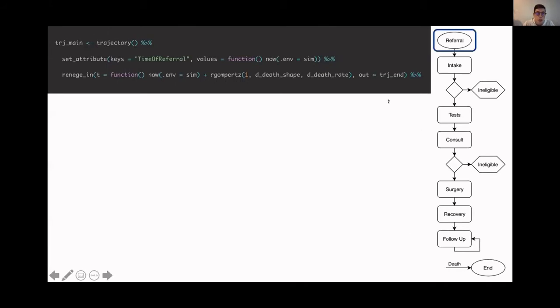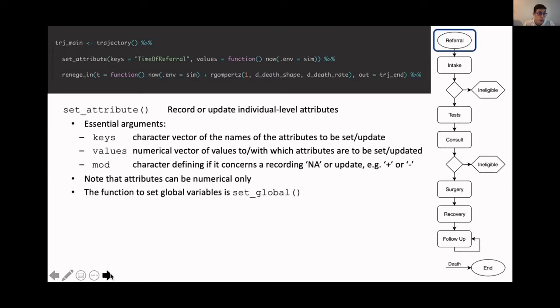Let's start implementing our model. We start with the model initialization at the referral. We define our trajectory, trajectory main in this case. To initialize the simulation for the individual, we record the time of referral. We want to know when this individual was referred. And for that, we use the set attribute function. This simply records or updates an individual level attribute, let's say a variable. You do so by specifying the names of the attributes and the value to which the attribute should be set.